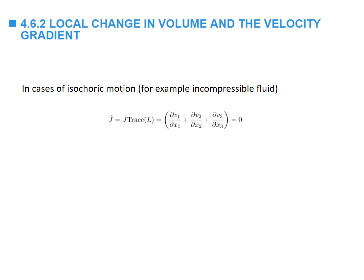In the case of isochoric motions, where volume is preserved, J̇ is equal to zero and J is always equal to one — meaning the determinant of F is always one. Therefore, the trace of L, which is the sum of the partial derivatives of the velocity components, equals zero. This is the continuity equation for incompressible fluids.